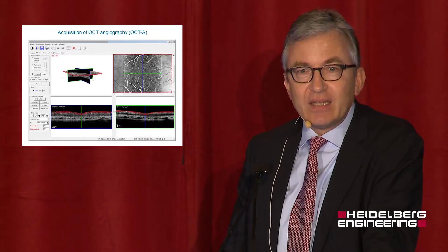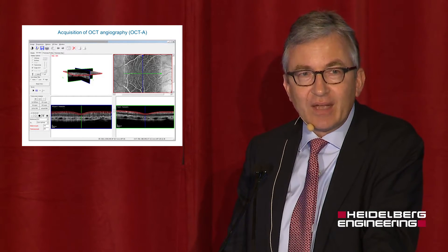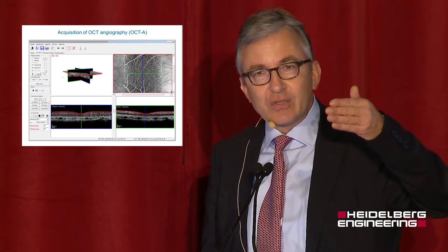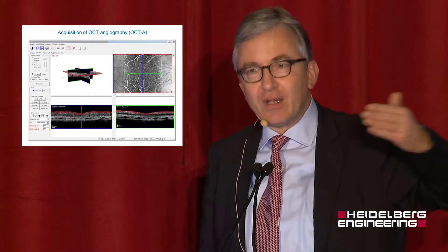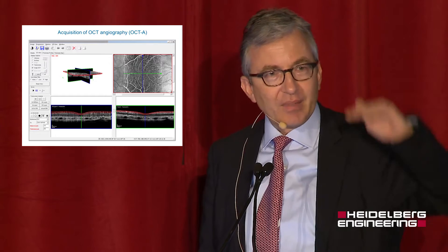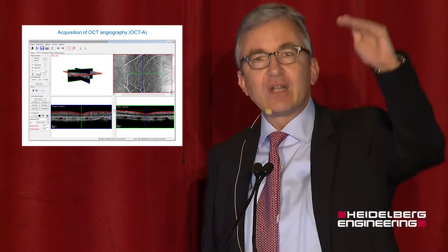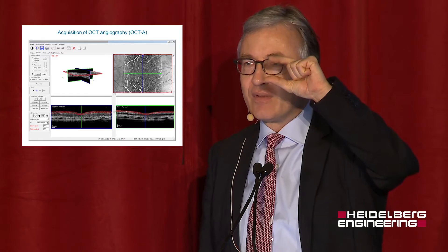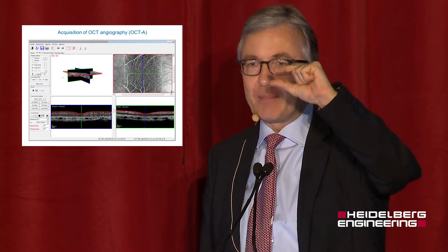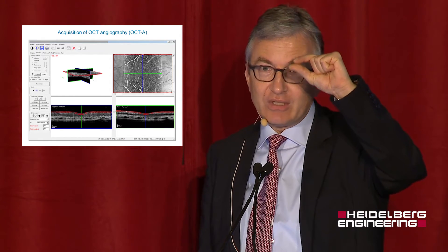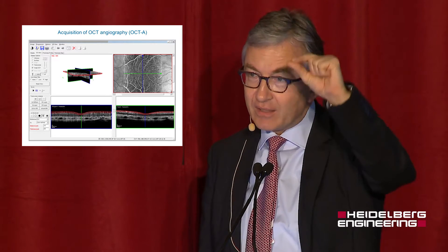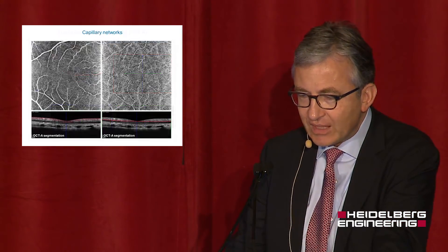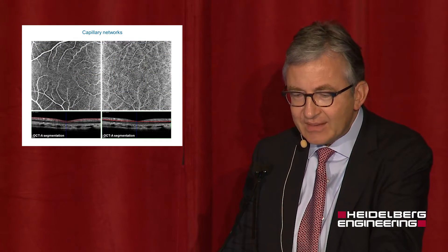Here with the Spectralis instrument, we have learned and seen already beautiful images. We are used in the B-scans to scroll basically horizontally, but now we do the scrolling vertically and can define the vertical dimension of our slab, which gives the opportunity to particularly look at the capillaries in the inner portions of the neurosensory retina.